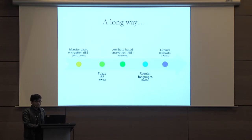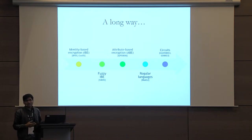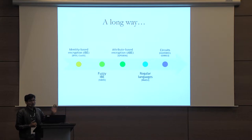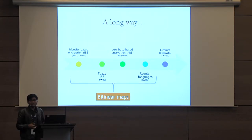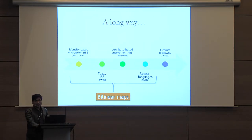Predicate encryption has come a long way, starting from identity-based encryption, which corresponds to the predicate equality, all the way up to arbitrary circuits. But bilinear maps remain the most practical way of building predicate encryption schemes, if not the most powerful.